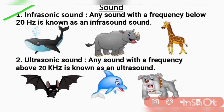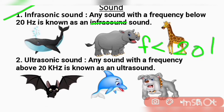First is infrasonic sound. Any sound with a frequency below 20 Hz is known as infrasonic sound. The examples of infrasonic sound are whale, dinosaurs, and giraffe — they can hear frequencies below 20 Hz.